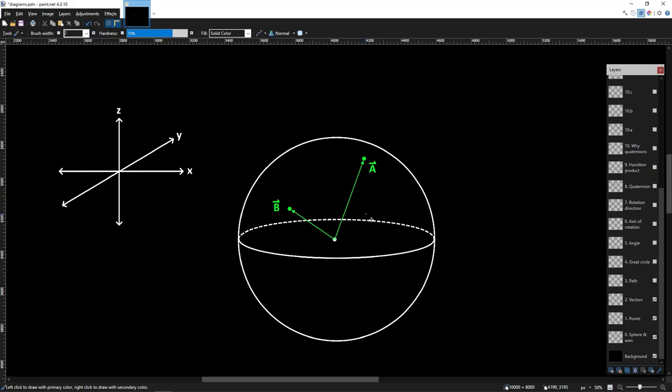Now the problem we want to solve is how do we take the vector A and rotate it such that it becomes the vector B? This blue path here is the shortest path along the surface of the sphere that connects the point A to the point B. One way we can approach this problem is by extending this blue curve all the way around the surface of the sphere, which gives us this red circle. There is an angle between A and B that we can label W, and this lies in the plane that contains the red circle.